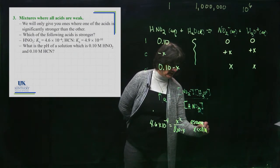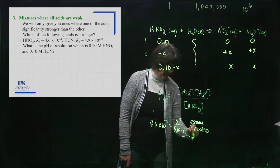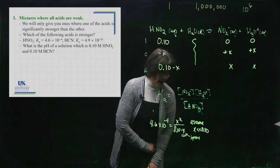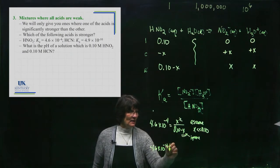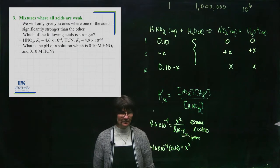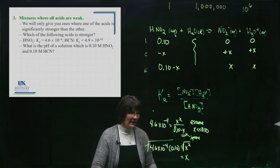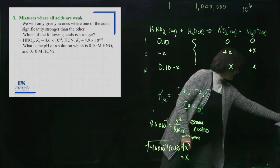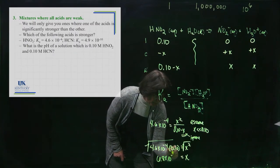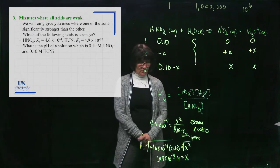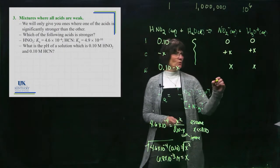I'm going to assume, I will later check my assumption, that X is much, much smaller than 0.10. That allows me to ignore this term right here. I'm going to multiply by 0.10, so I have 4.6 times 10 to the minus 4 times the denominator brought over here is equal to X squared. Then I will take the square root of both sides and that will give me an X value of 6.8 times 10 to the minus 3. That would be the concentration of H3O+, but we should check our assumption.